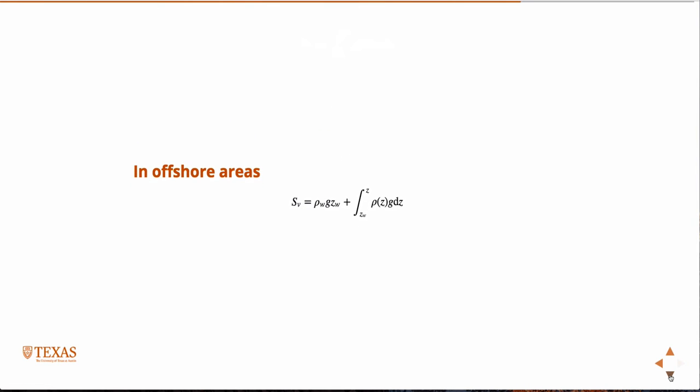So in offshore areas, then, we just split off the rock from the water because we know the density of water is constant, basically. Avoiding small fluctuations in salt content or something, the density of water is constant, so then we just have the density of water times gz, where z is the depth of the water. And then we just compute the integral from the depth of the water to the depth we're interested in.